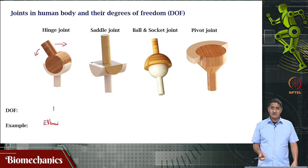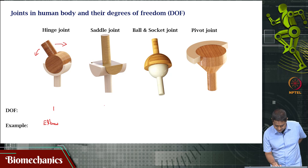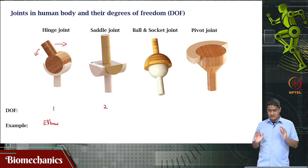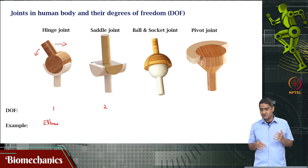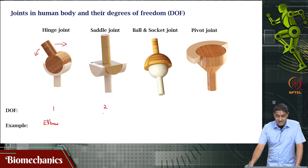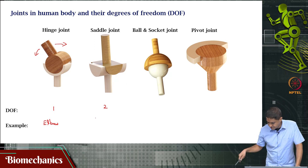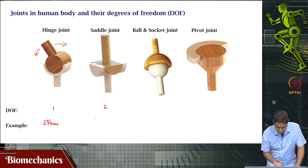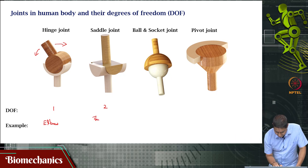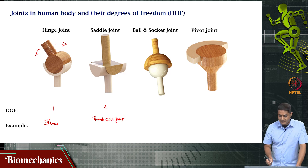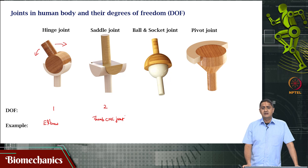How many degrees of freedom does this have? Obviously there are two degrees of freedom, because there is the anterior-posterior movement and the mediolateral movement. So there are two degrees of freedom. The example is the thumb carpo-metacarpal joint that occurs between the trapezium bone and the first metacarpal.